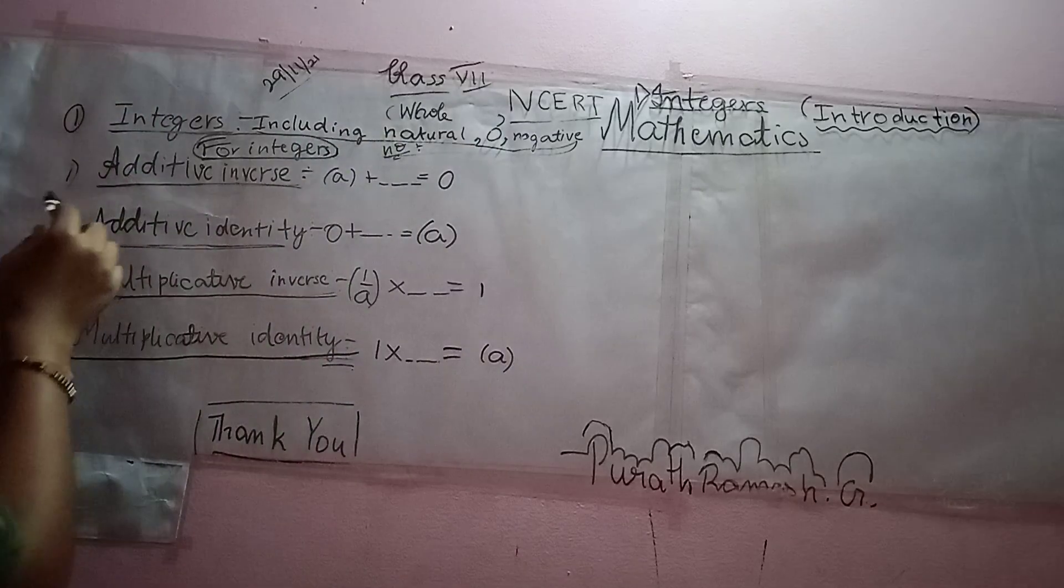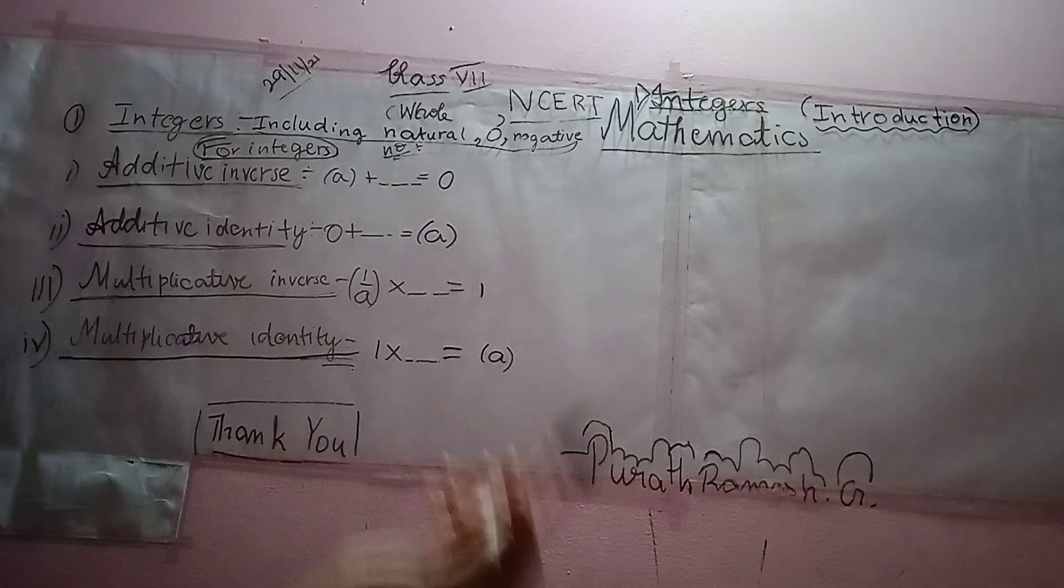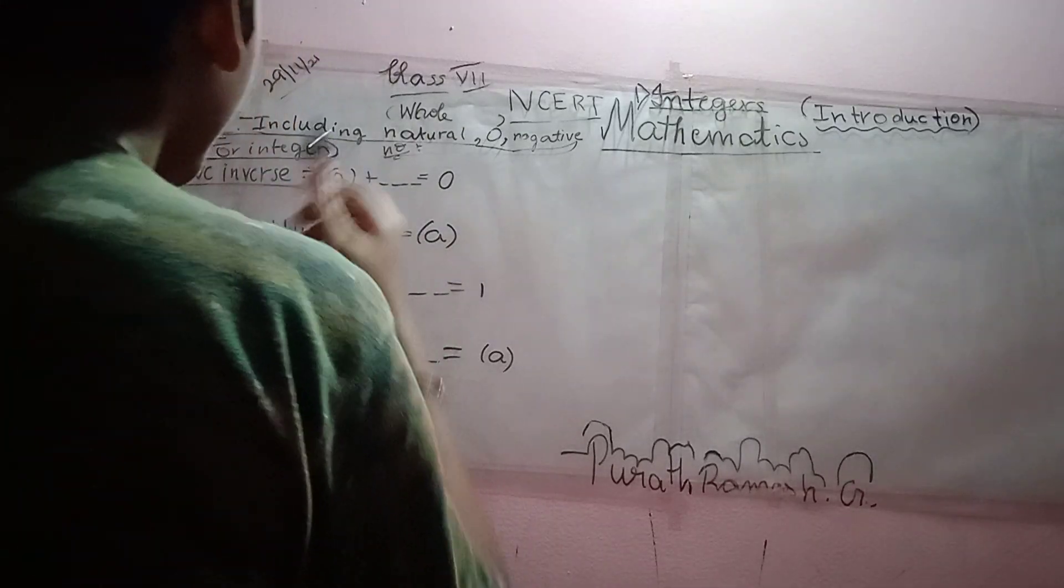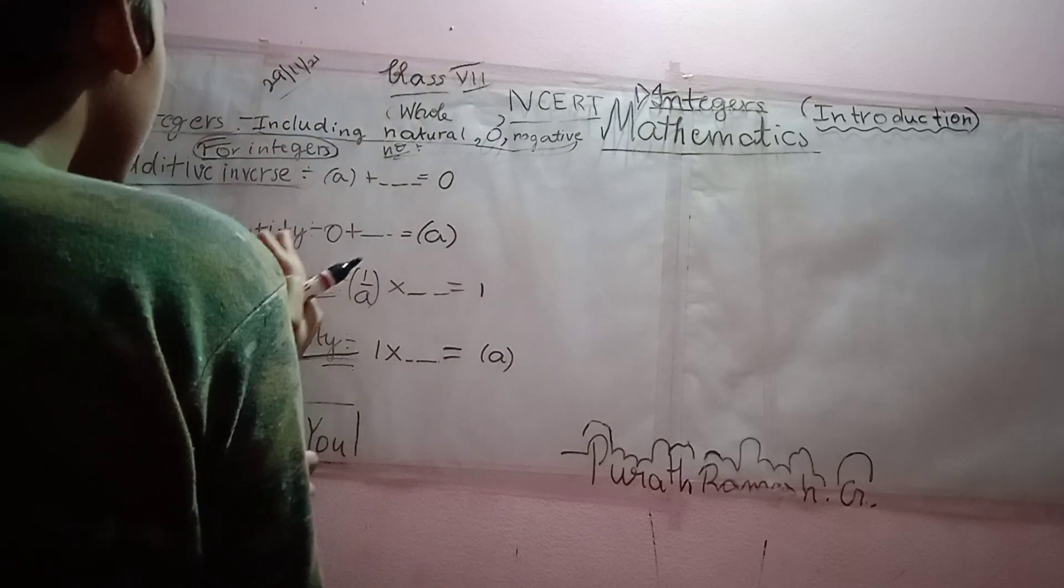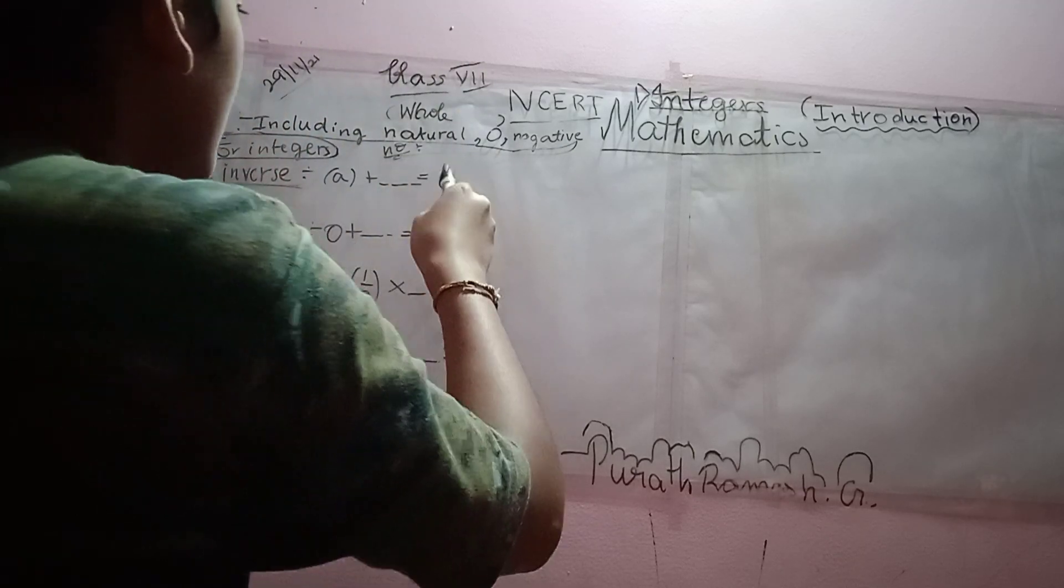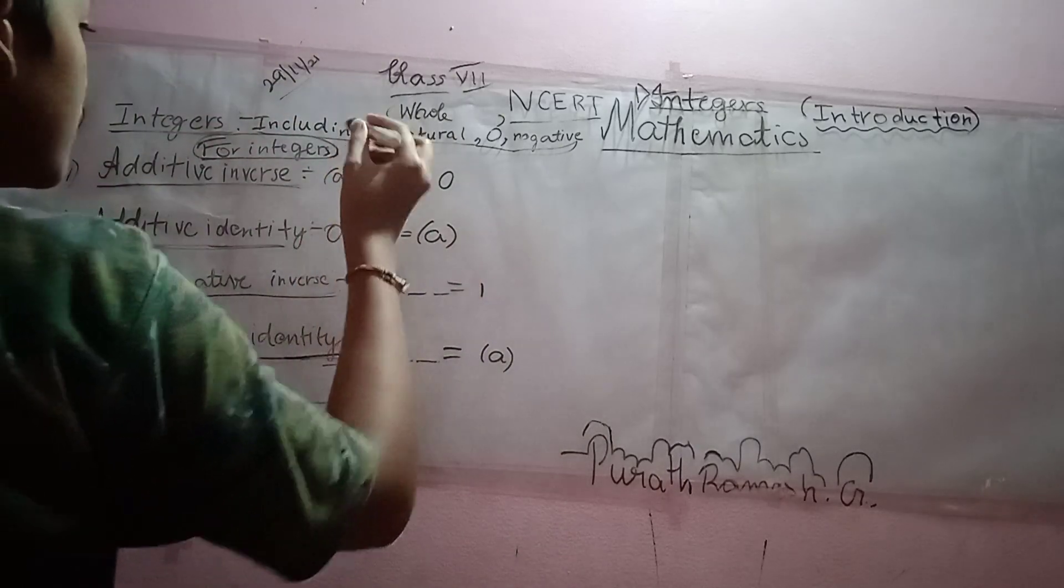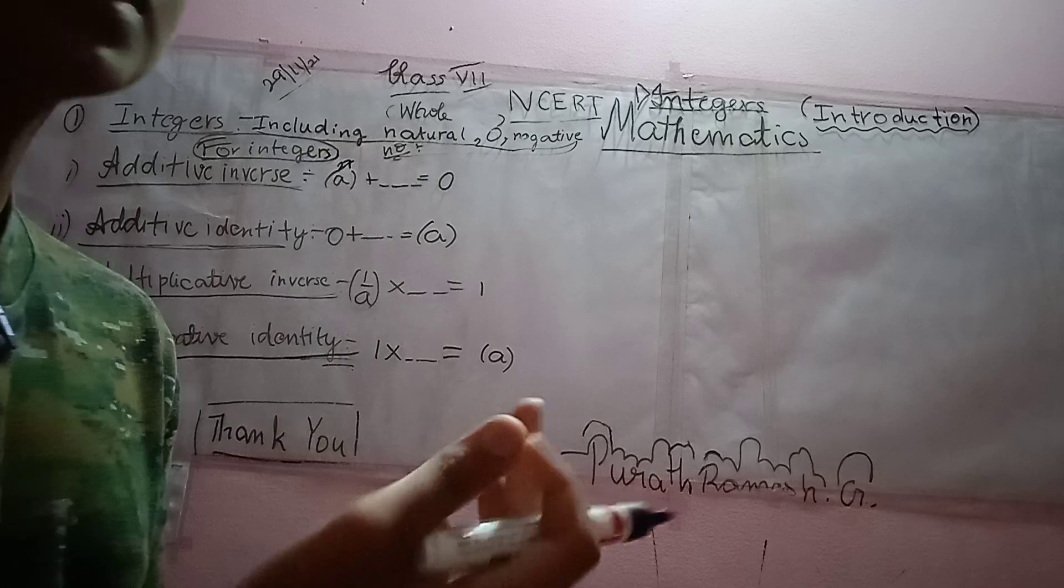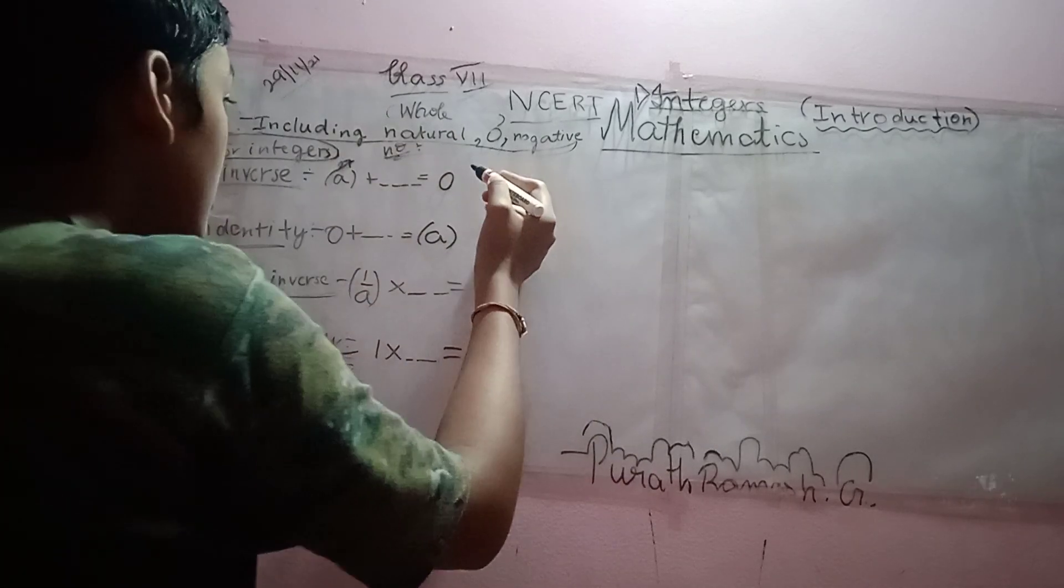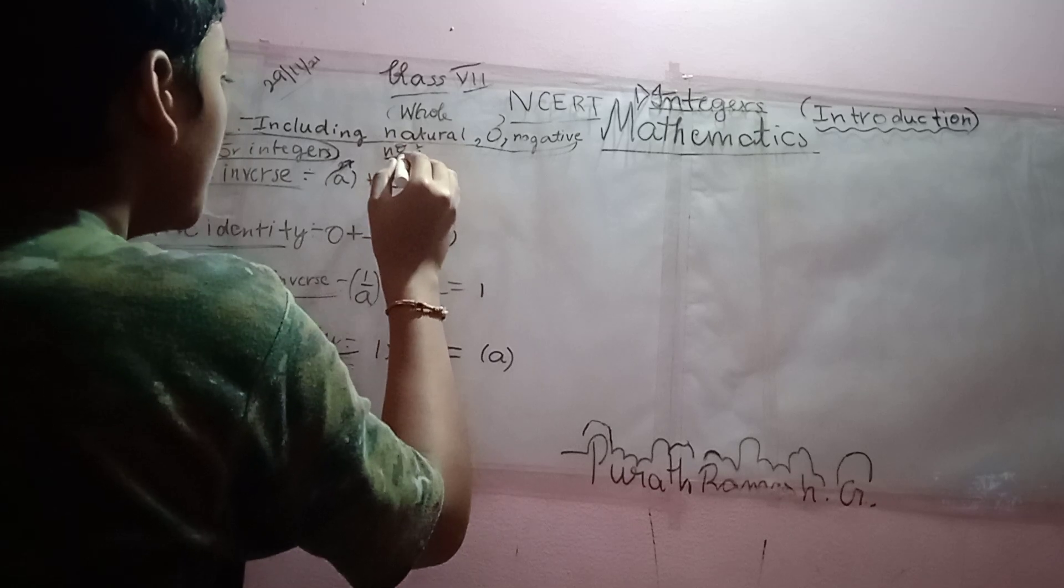So, first property or the first basic property of integers is additive inverse. What is additive inverse? If we add any integer to an integer, we should get 0. What number is it? For A, for suppose this is 27, we should add a number such that we should get 0. What is that number? It is minus A which will be minus 27.